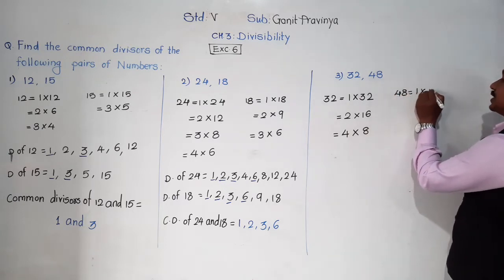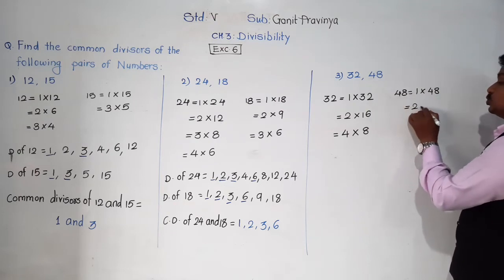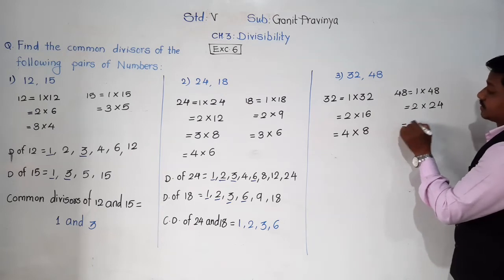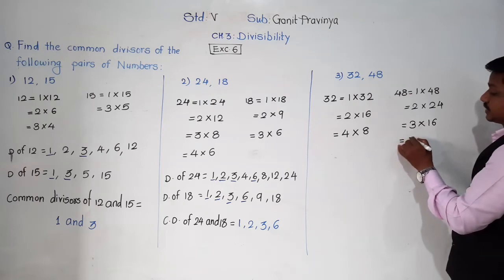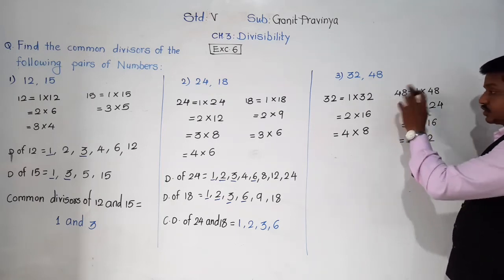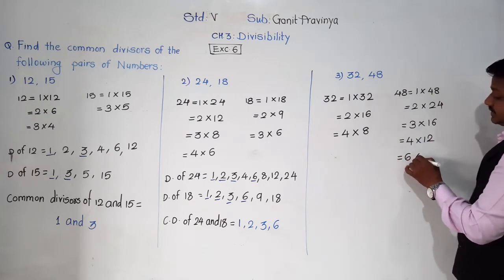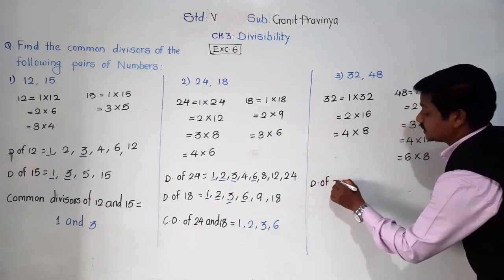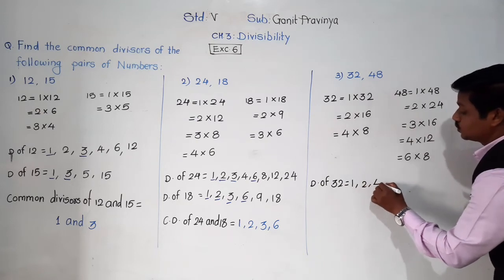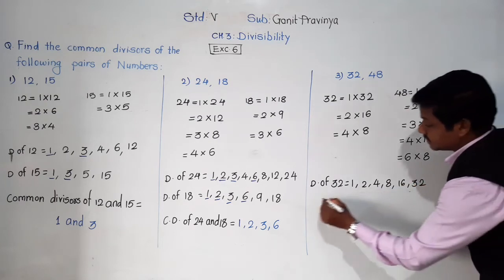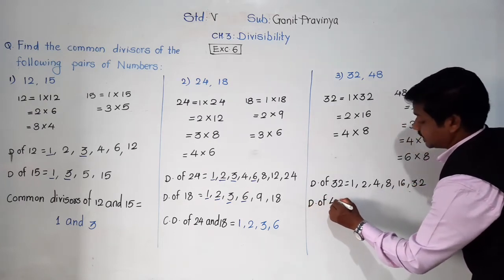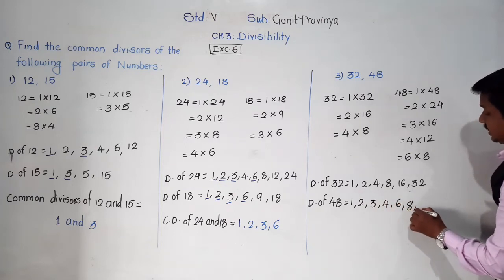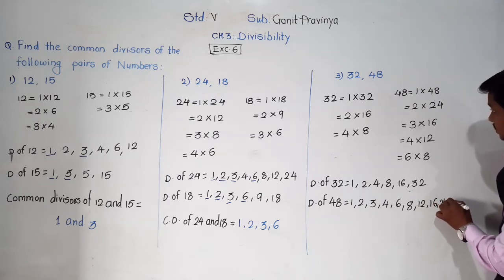For 48: 1 × 48 is the first pair. It is divisible by 2 also: 2 × 24 equals 48. Then 3 × 16 equals 48. Then 4 × 12 equals 48. Then 6 × 8 equals 48. So divisors of 48 are 1, 2, 3, 4, 6, 8, 12, 16, 24, and 48.